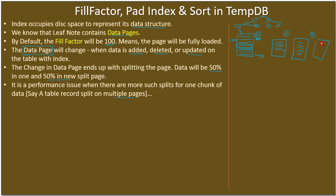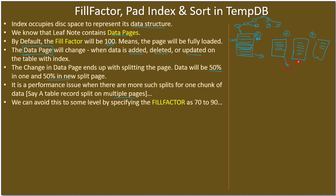If further updates and deletions happen for the same root level, the page will be split again. Likewise this split will happen repeatedly when there are more additions, deletions, and updates. It's a performance issue when there are more such splits for one chunk of data. If an index scan results in these split pages, it needs to pick data from all these split pages. We can avoid this to some level by specifying the fill factor to 70 or 90 percent.